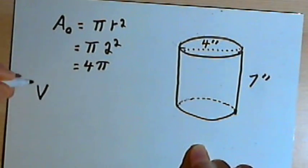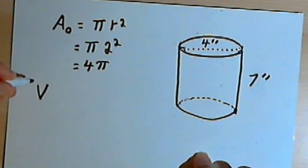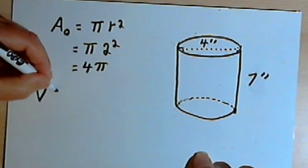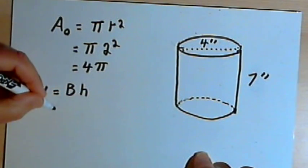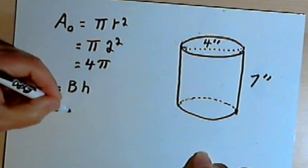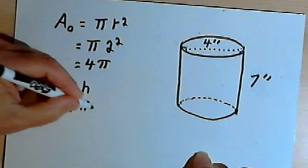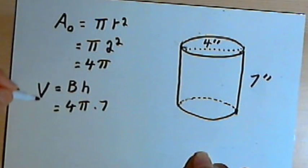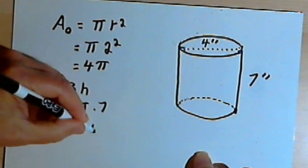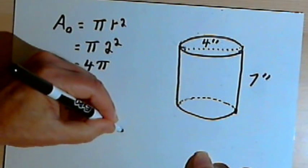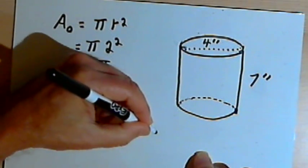Now we'll take our formula for the volume of a cylinder or a prism. It's going to be that the volume is the area of the base times the height. The base has an area of 4 pi, and the height is 7. So we're going to end up with 28 pi. Once again, that's cubic inches.